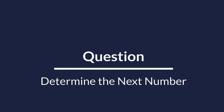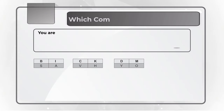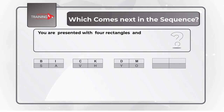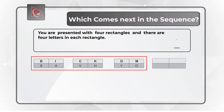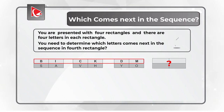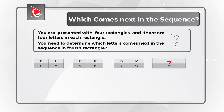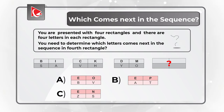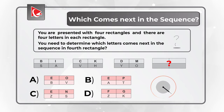Here is one of my favorite questions where you need to determine the next item in a sequence. You are presented with four rectangles, each containing four letters — two bold on the upper row and two regular font on the lower row. Three rectangles contain letters and you need to determine the letters in the fourth rectangle. You have four different choices: A, B, C, and D. Take a close look to see if you can determine the answer.